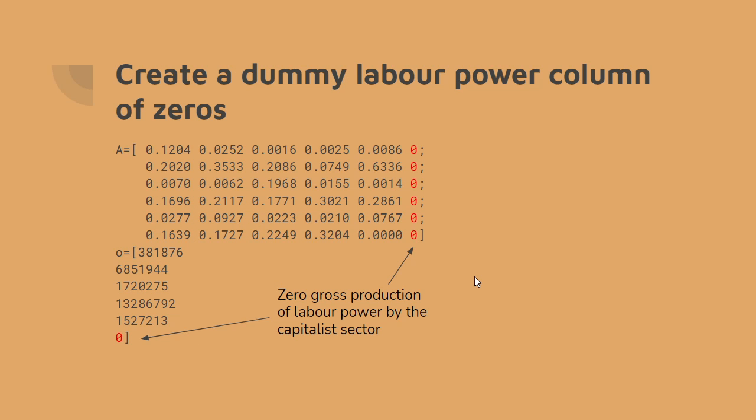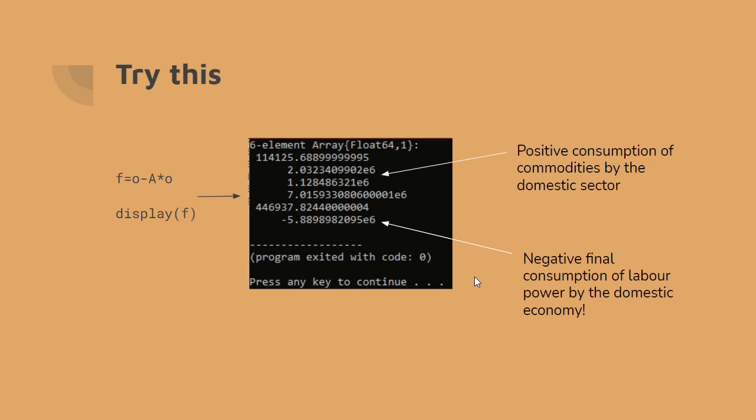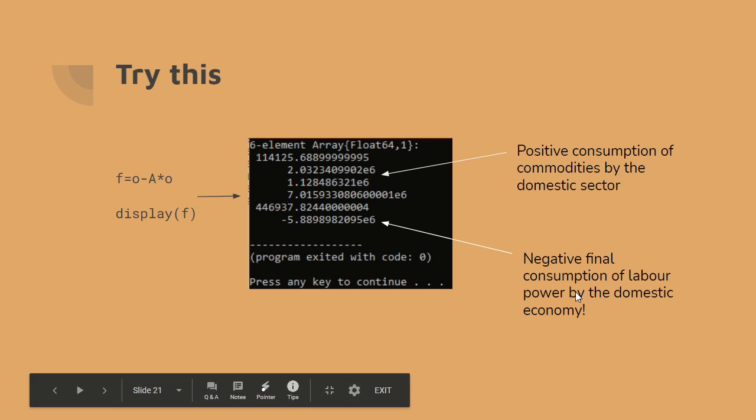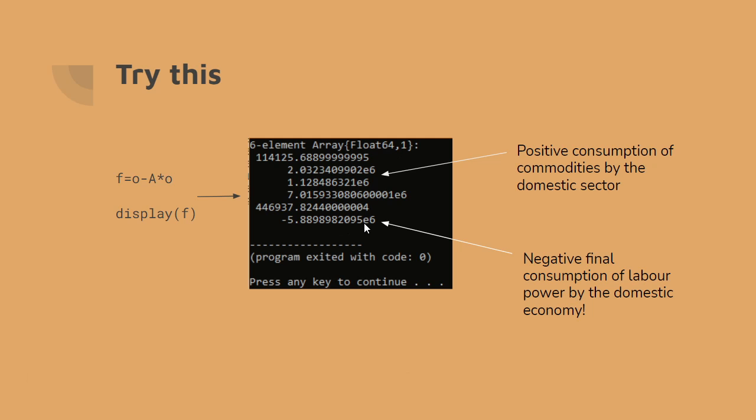How do you deal with this? You deal with it by creating a dummy labour power column of all zeros. There's zero gross production of labour power by the capitalist sector. If you run that, you can then get a meaningful result. You get positive consumption of commodities by the domestic sector, and a negative final consumption of labour power by the domestic economy. The amount of labour power is shown as negative, because the domestic economy, household economy, doesn't consume labour but gives up labour in return for a stream of consumption. This is not strictly equivalent to the wage bundle, because the EU accounts don't separate out consumption by social class, so this includes some capitalist consumption in the vector.